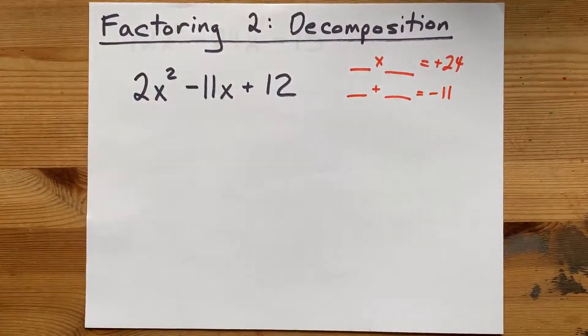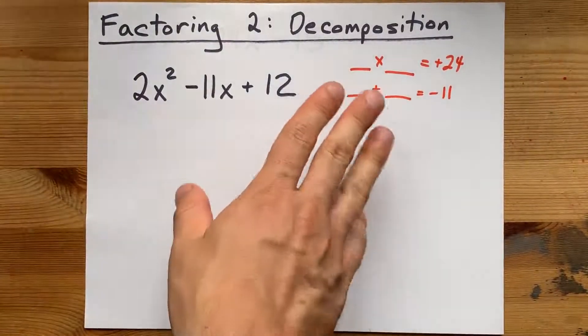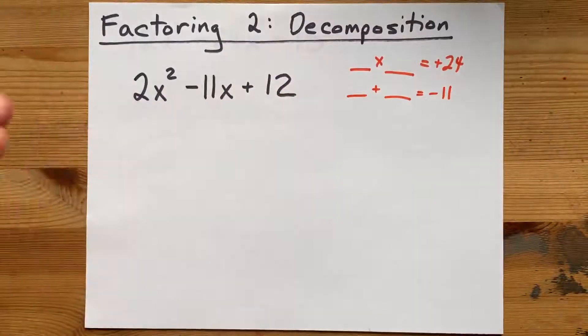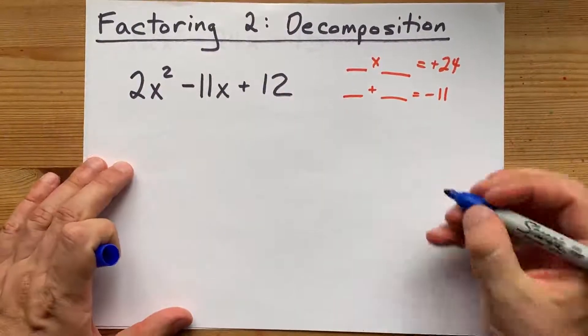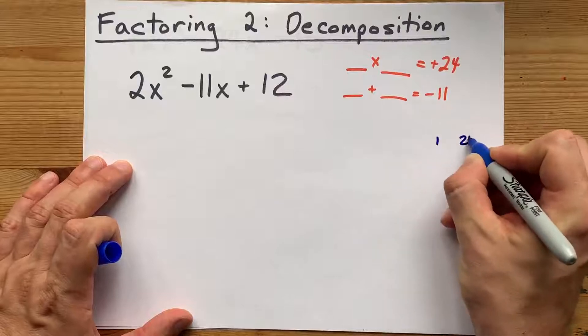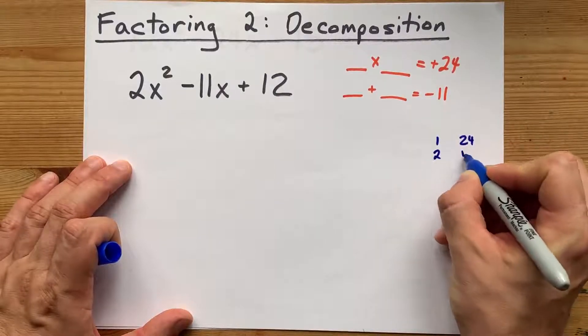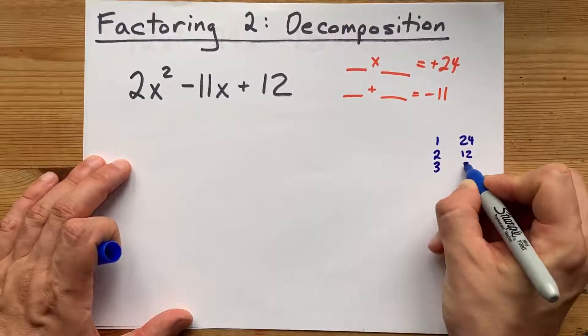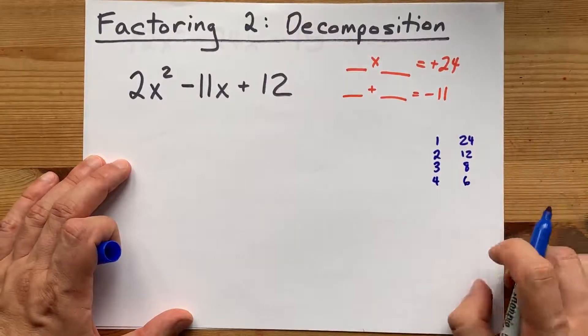Now that can be tricky sometimes. This is probably the toughest part of the whole thing. Now what are numbers that multiply to give you 24? Well, 1 times 24, 2 times 12, 3 times 8, and 4 times 6.